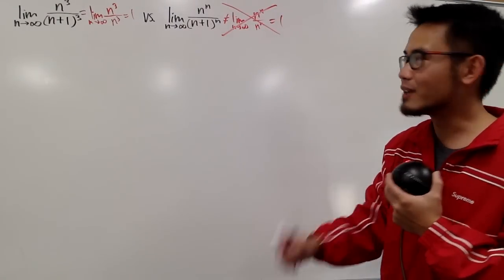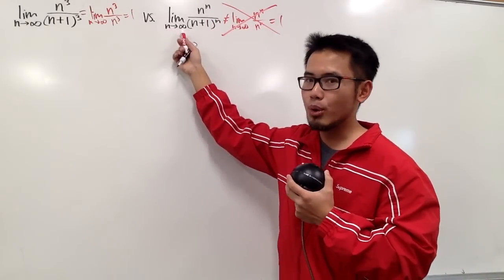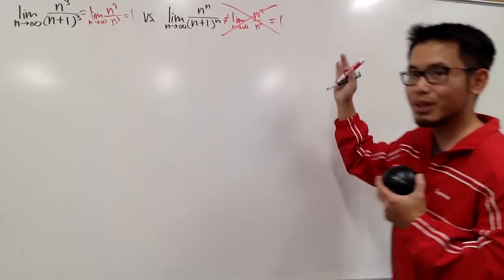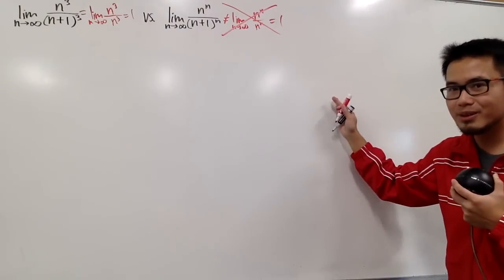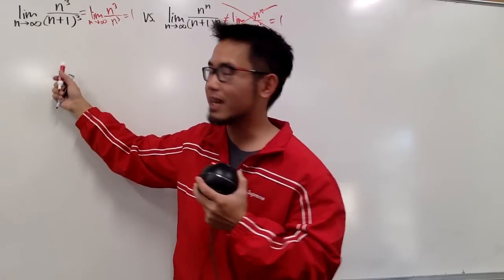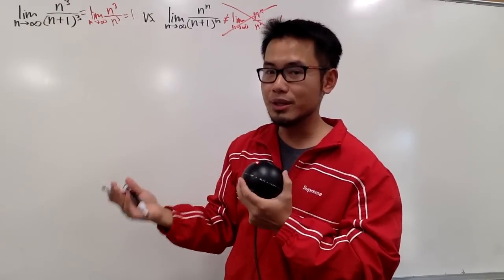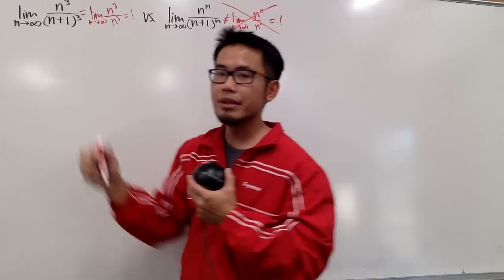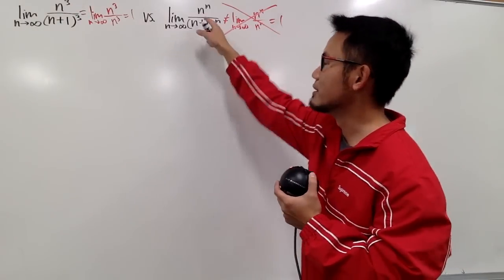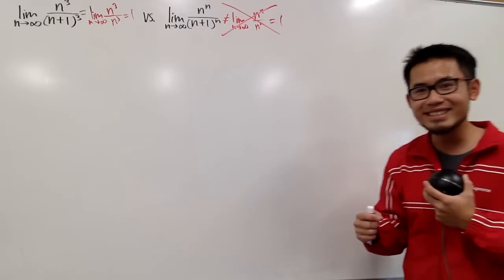The power here is n, and n is approaching infinity, so you have an infinite product. In comparison, the first one only has a finite product because the power is only 3. On the top it just means n times n times n, but the second one is n times n times n infinitely many times.